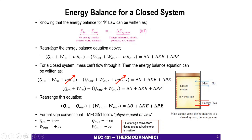The equation includes heat in, work in, and mass flow in, minus total energy out, equivalent to change in energy — internal energy, kinetic energy, and potential energy. For a closed system there is no mass flow, so we can remove the mass terms. The energy balance is written with only heat in, work in, heat out, work out, and changes in internal, kinetic, and potential energy.